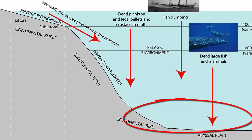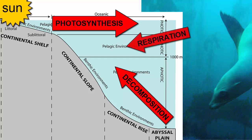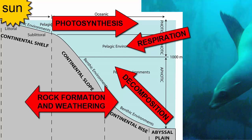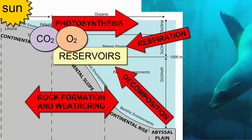When organic material and shells fall to the seafloor and collect, if they get buried before they decompose, then they can get incorporated into rocks and become part of the lithosphere. Through photosynthesis, respiration, decomposition, and rock formation and weathering, carbon dioxide and oxygen are exchanged and transferred between reservoirs — temporary storage areas for these gases.